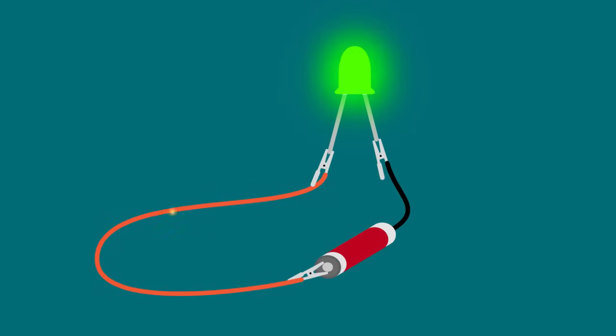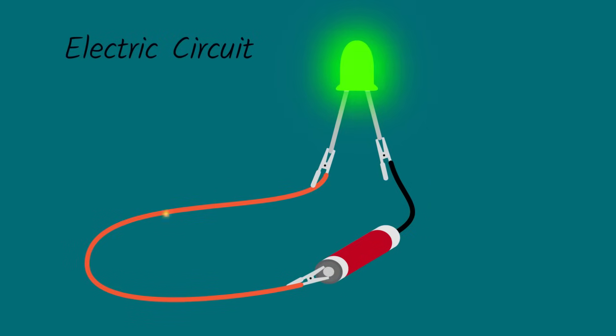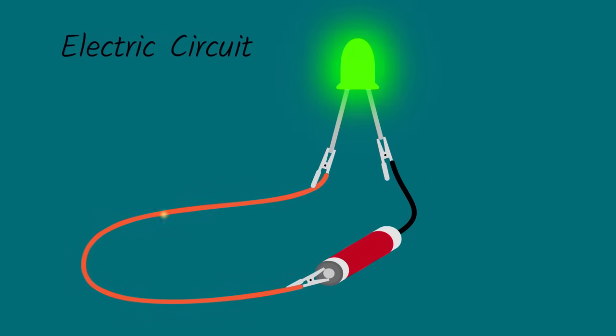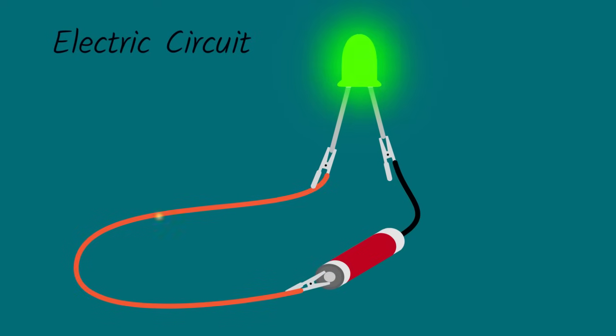To use electric current to power things, you have to create a complete pathway for the electric current to follow. This is called an electric circuit. An electric circuit is like a racetrack of conductive materials that let the electrons flow in a specific way.